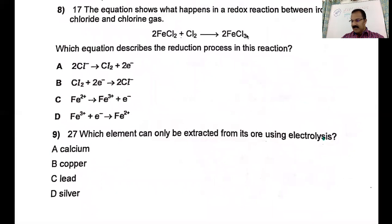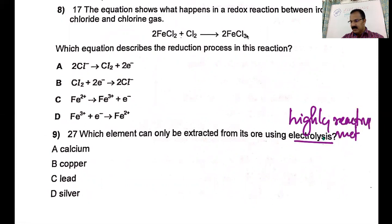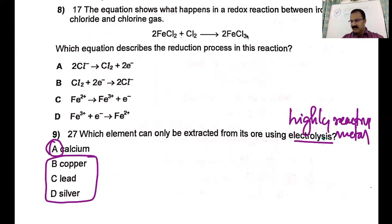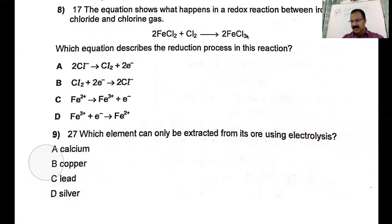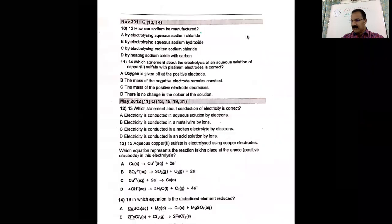Which element can only be extracted from its ore by electrolysis? The rule is that electrolysis is used for highly reactive metals. Out of copper, lead, and silver — these are all less reactive metals. Only calcium, in group two, is a highly reactive metal. Highly reactive metals can be obtained only by electrolysis, so that is the answer.